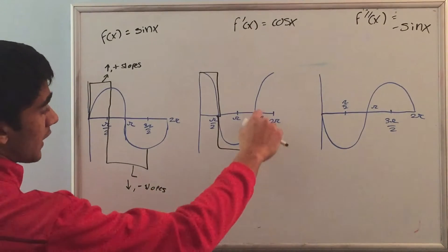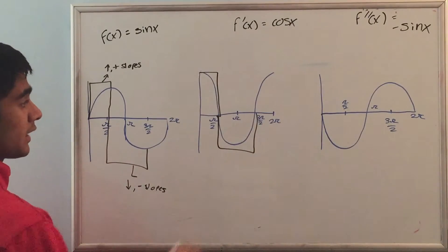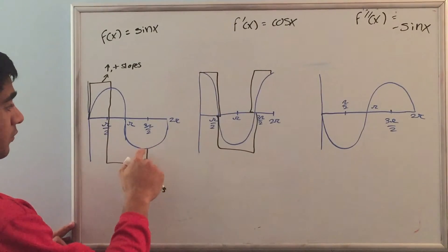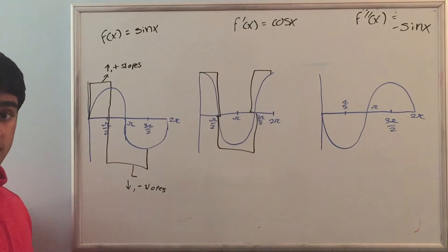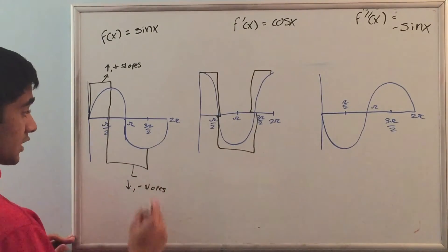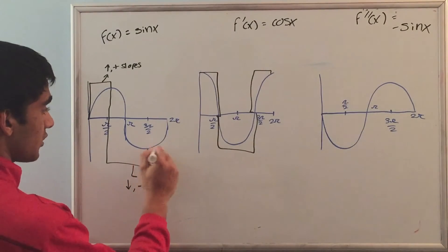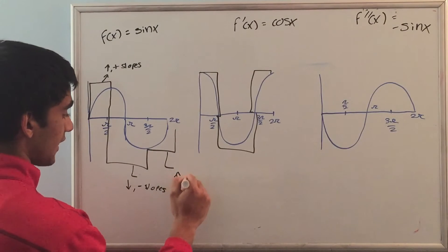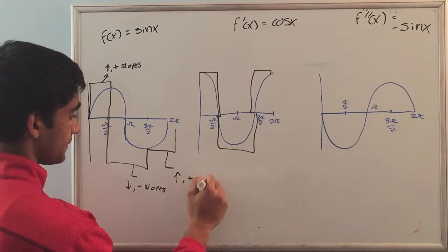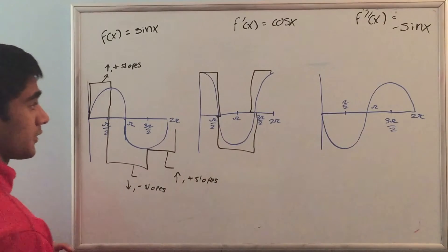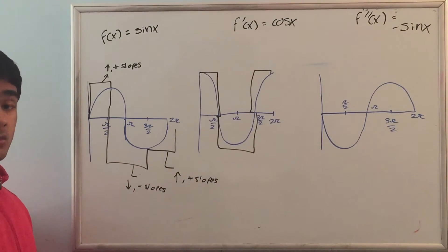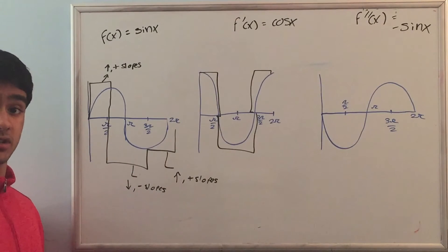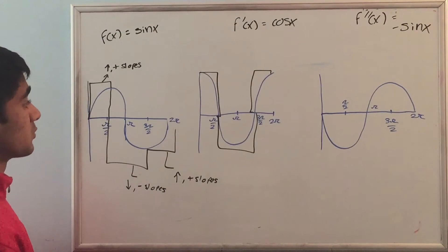If we look at from 3 pi over 2 to 2 pi, the first derivative is positive again. Notice that here the slopes are positive and the function is increasing — it's going up. So from here to here, we can say that it is increasing and it has positive slopes. So the sign of the derivative can tell us whether the function at that specific region is increasing or decreasing and whether the slopes are positive or negative.